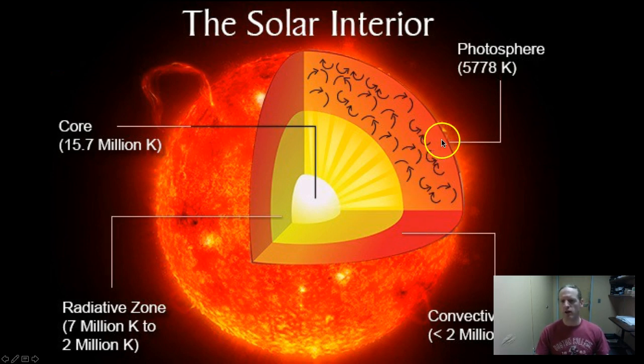And then finally, the very outermost layer, what we would refer to as the surface, is what we call the photosphere. And this is where, when we look up at the Sun, we take a photo of it, this is what we see. Hence, photosphere.